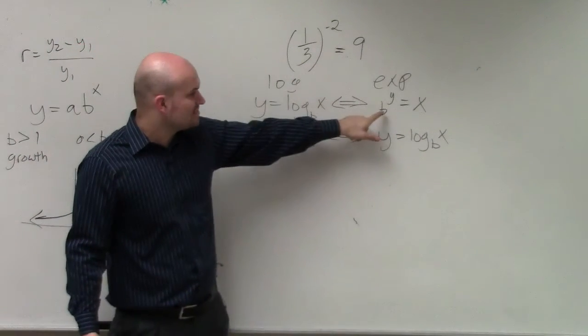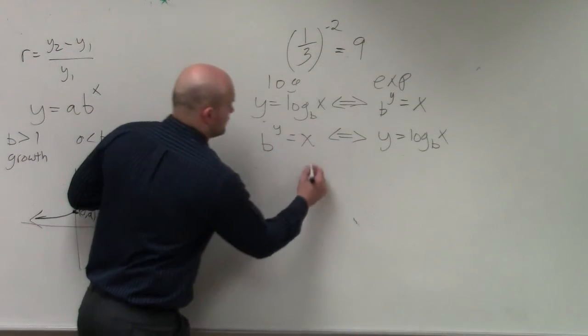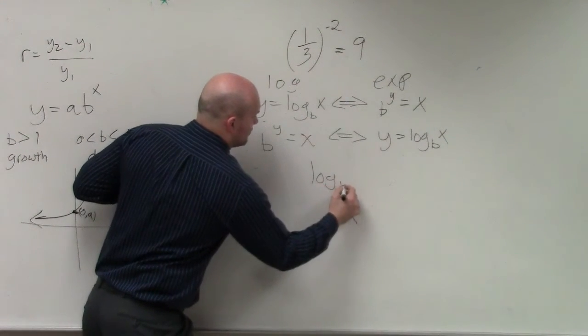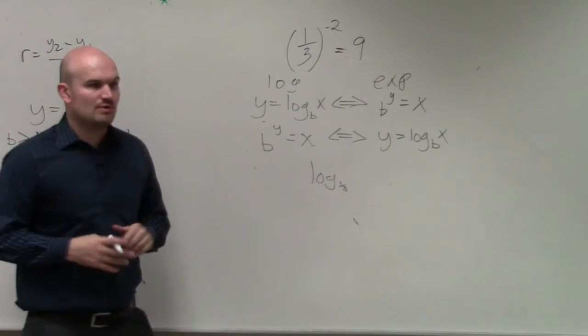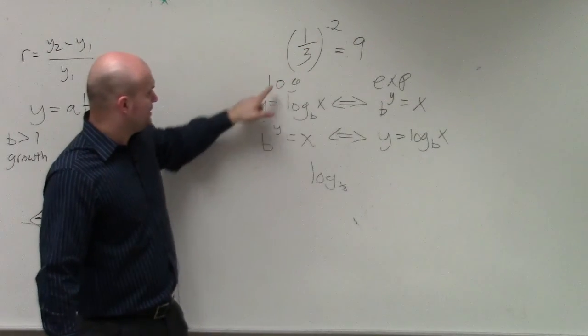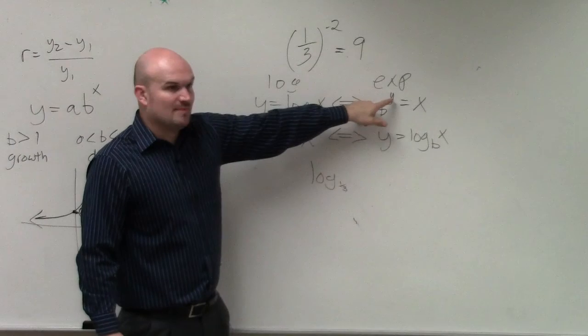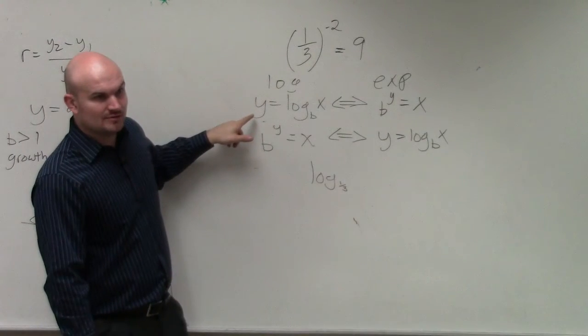Now, notice the base of the exponent is the base of the logarithm, correct? So I'm going to have log base 1/3. Then whatever the power of my exponent was, that's what my logarithm is equal to. Do you guys see that? The power of my exponent is what my logarithm is equal to.